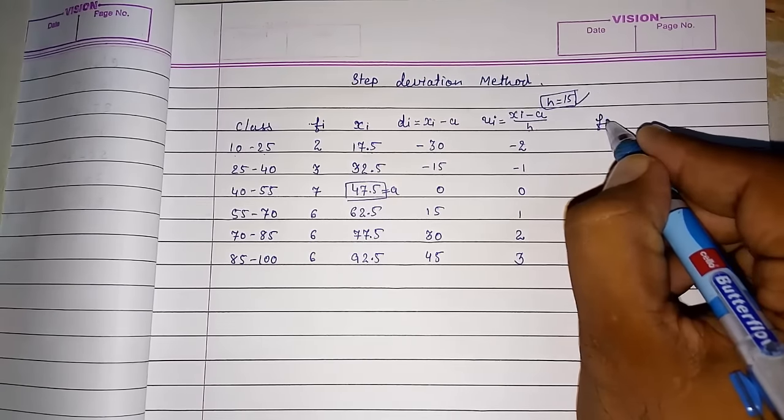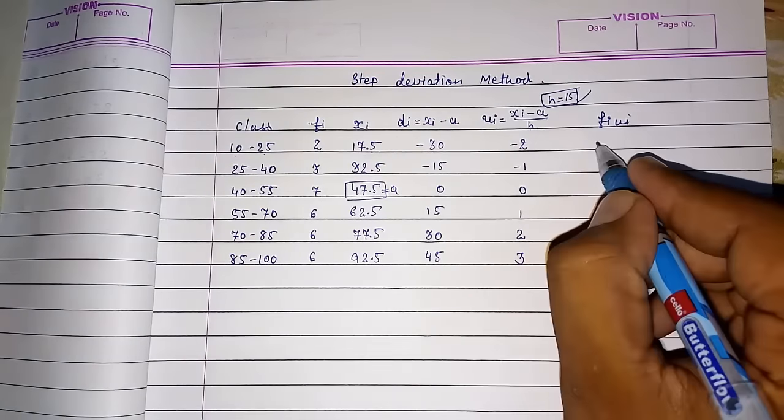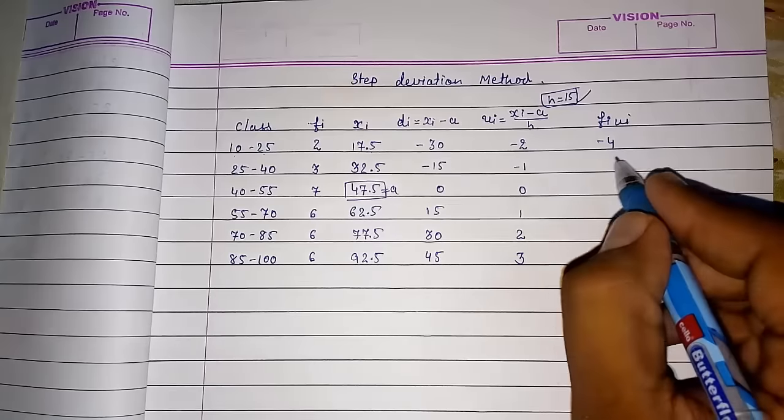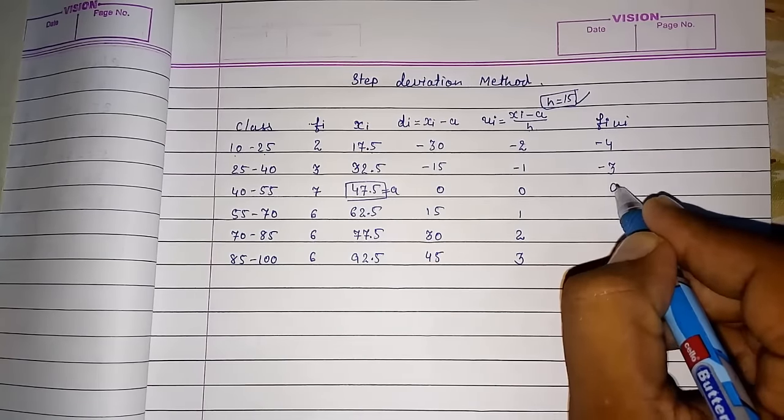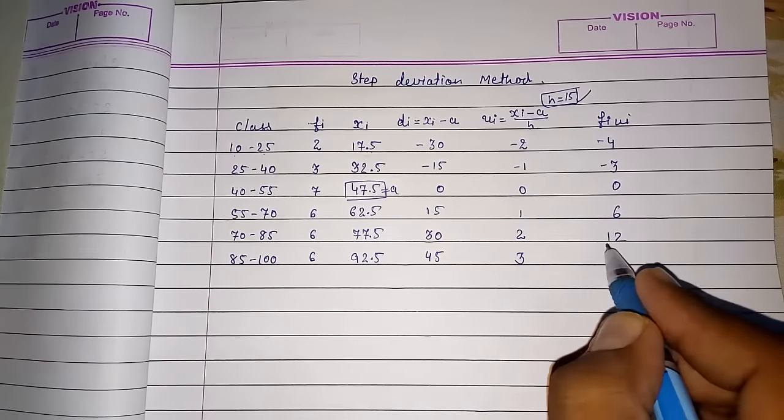So now you have to find out Fi UI. Now 2 into minus 2 minus 4. 3 into minus 1 minus 3. 0, 6 into 1, 6. 6 into 2, 12. 6 into 3, 18.